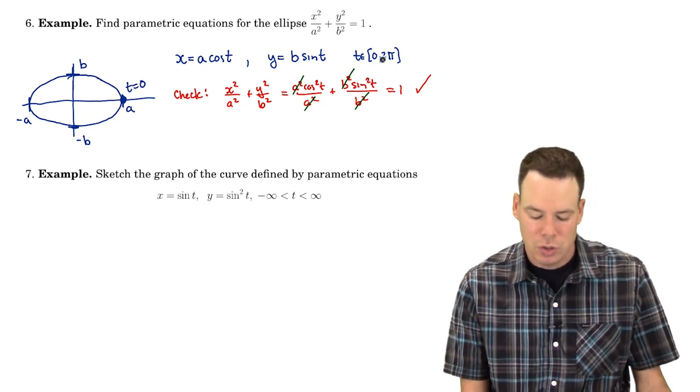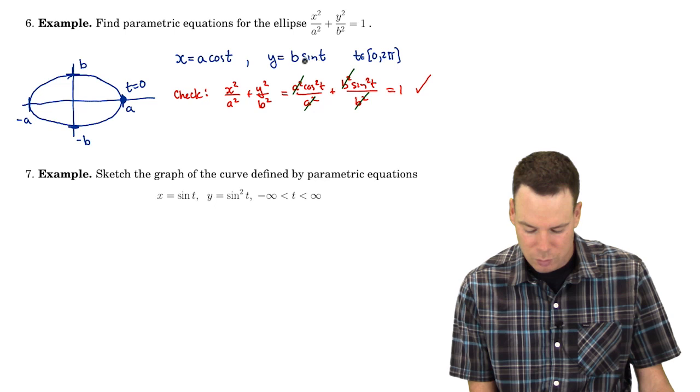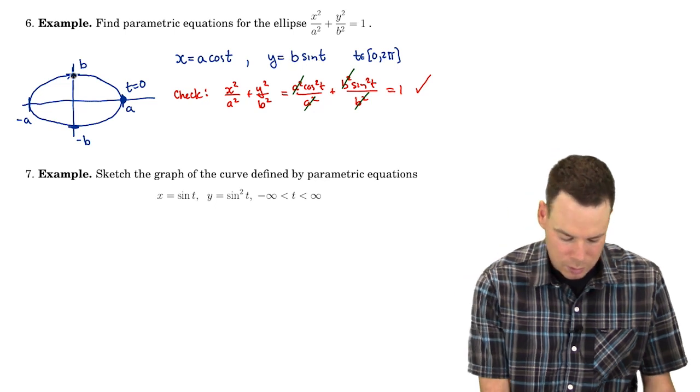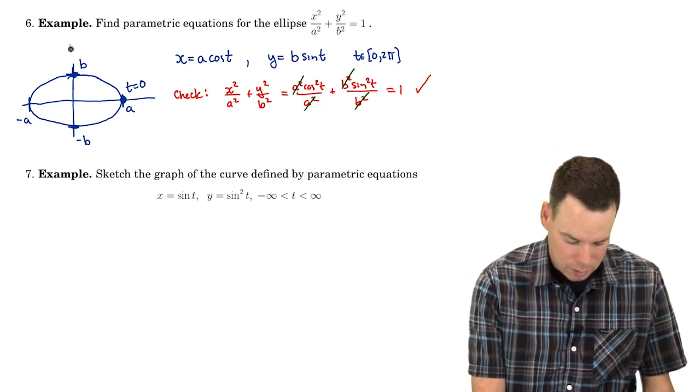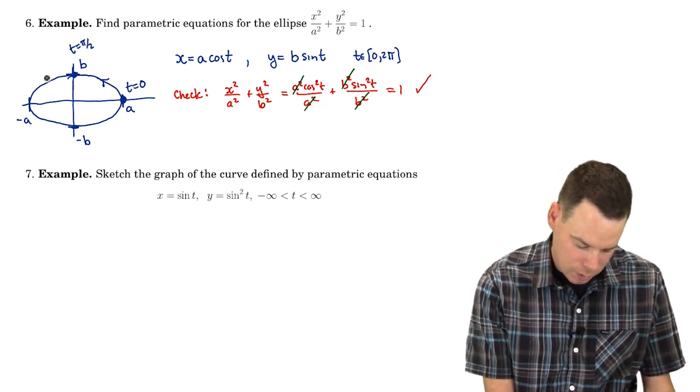When t is π/2, cos of π/2 is 0 so the x coordinate is 0, sine of π/2 is 1 so the y value is b so we're up here at t equals π/2 and so we're tracing it in this direction.